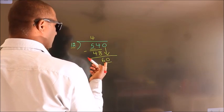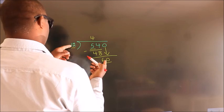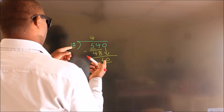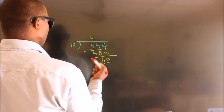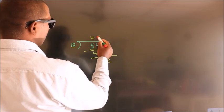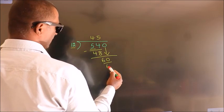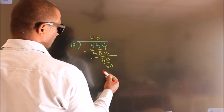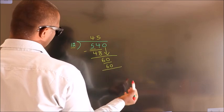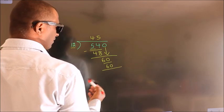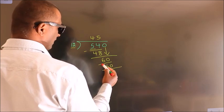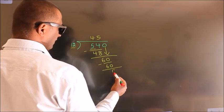When do we get 60 in the 12 table? 12 fives is 60. Now we subtract. We get 0.